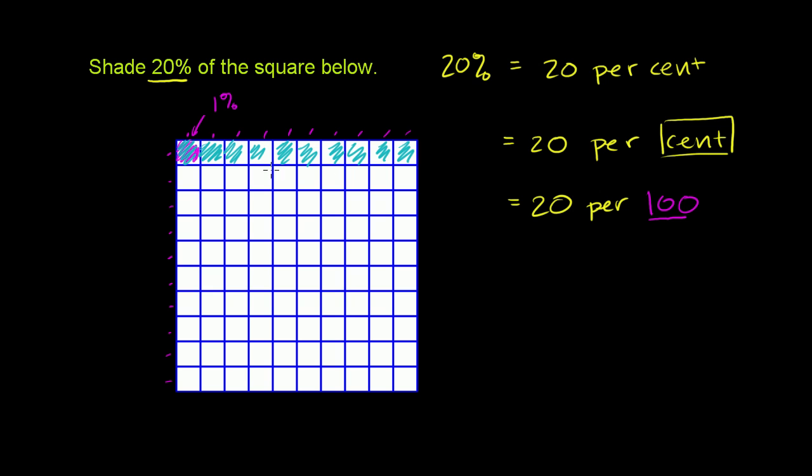And then we want to do 20, so that'll be one more row. So I can shade in this whole other row right here. And then I would have shaded in 20 of the 100 squares.